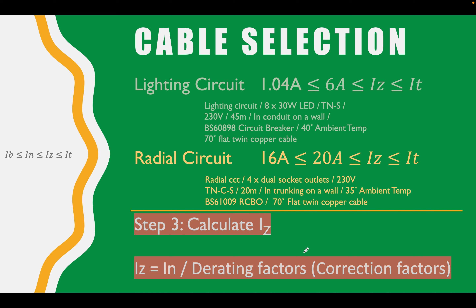When we say correction factors, what we're talking about is external influences on the current carrying capacity of the cable. For example, if we've got a cable in a loft clipped to a joist and completely covered in insulation, versus one cable clipped to a wall in a garage directly, the cable on the wall is subject to less heat. Heat creates more resistance, so if resistance is up, the current carrying capacity of the cable is going to be down.